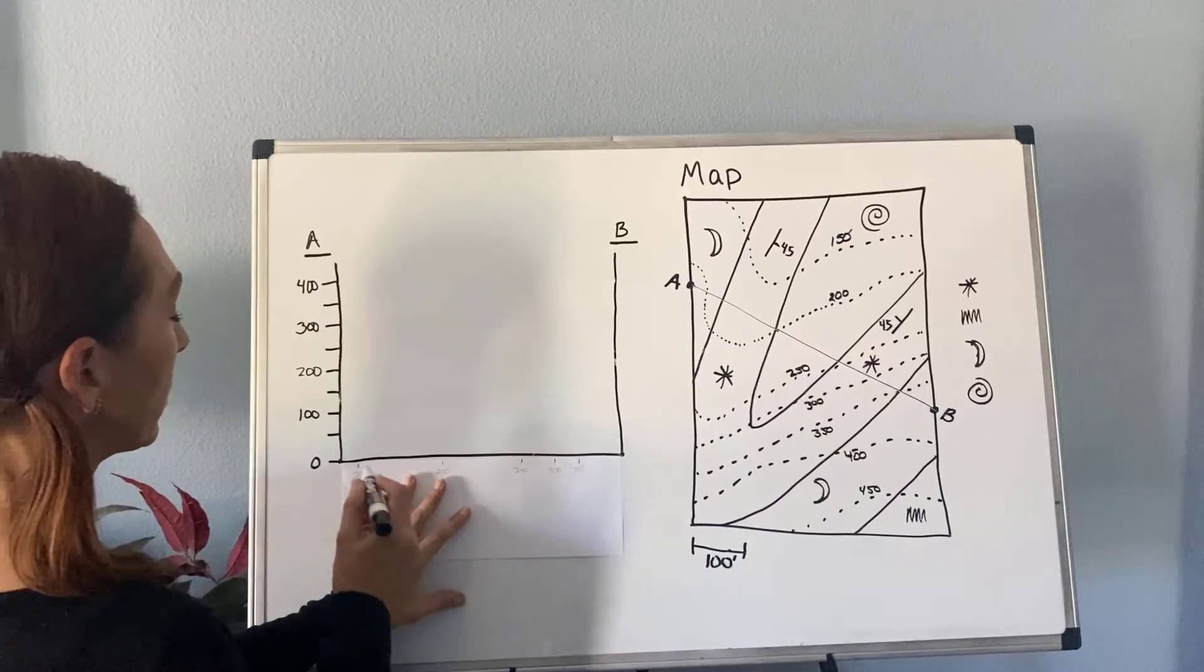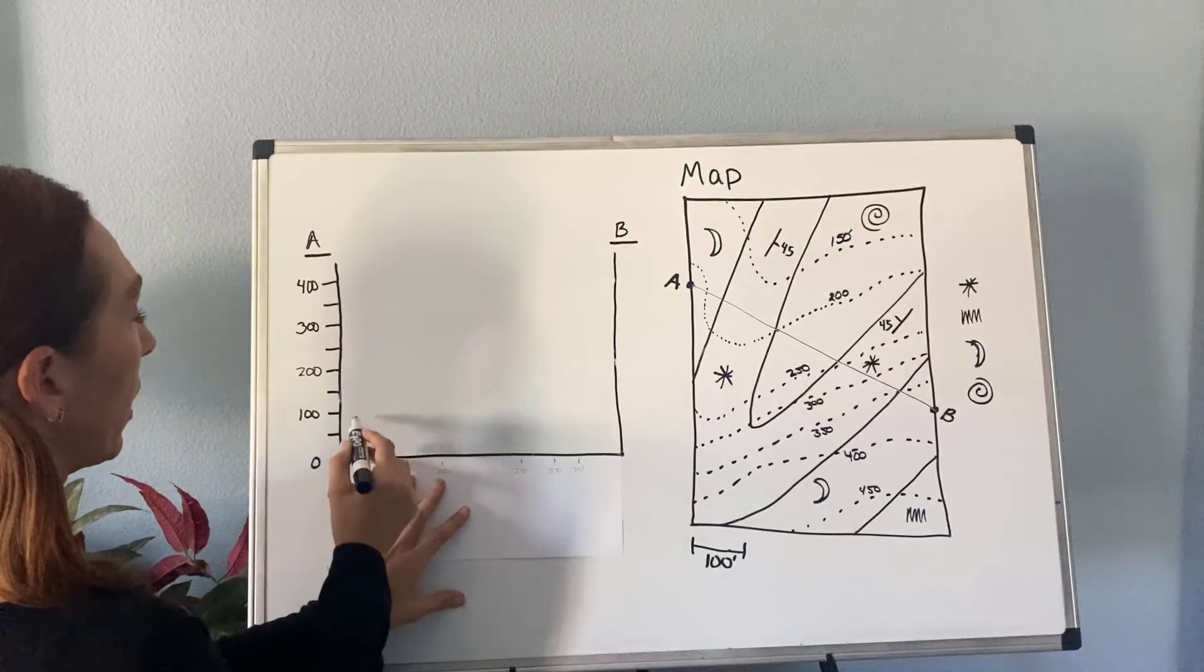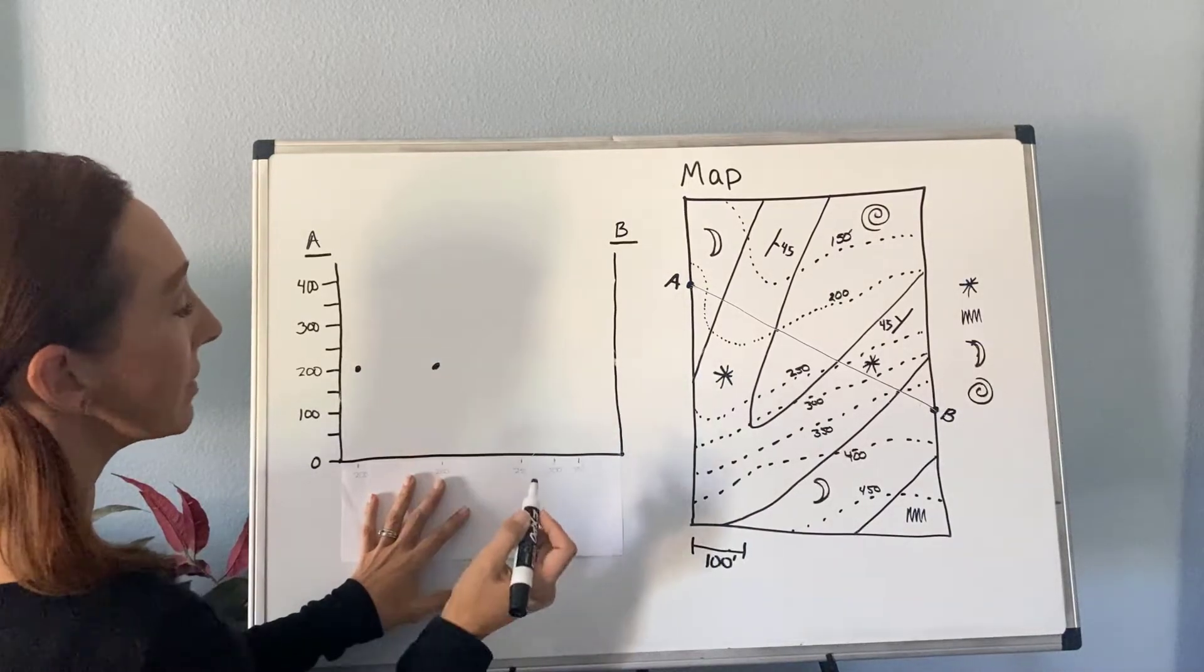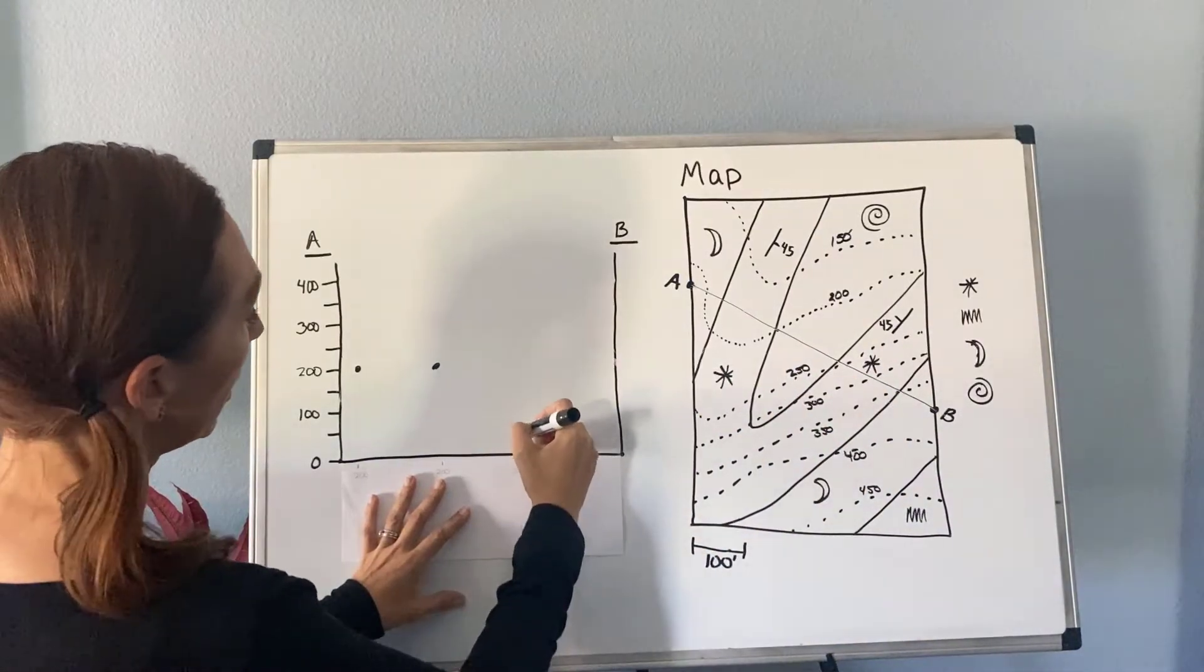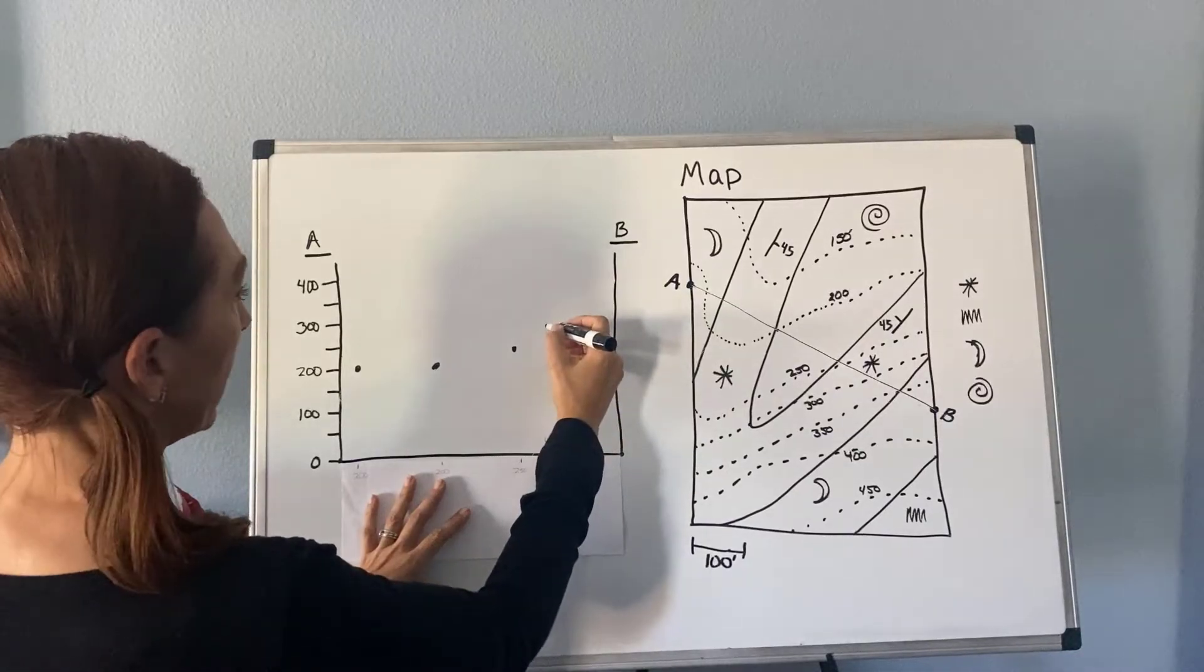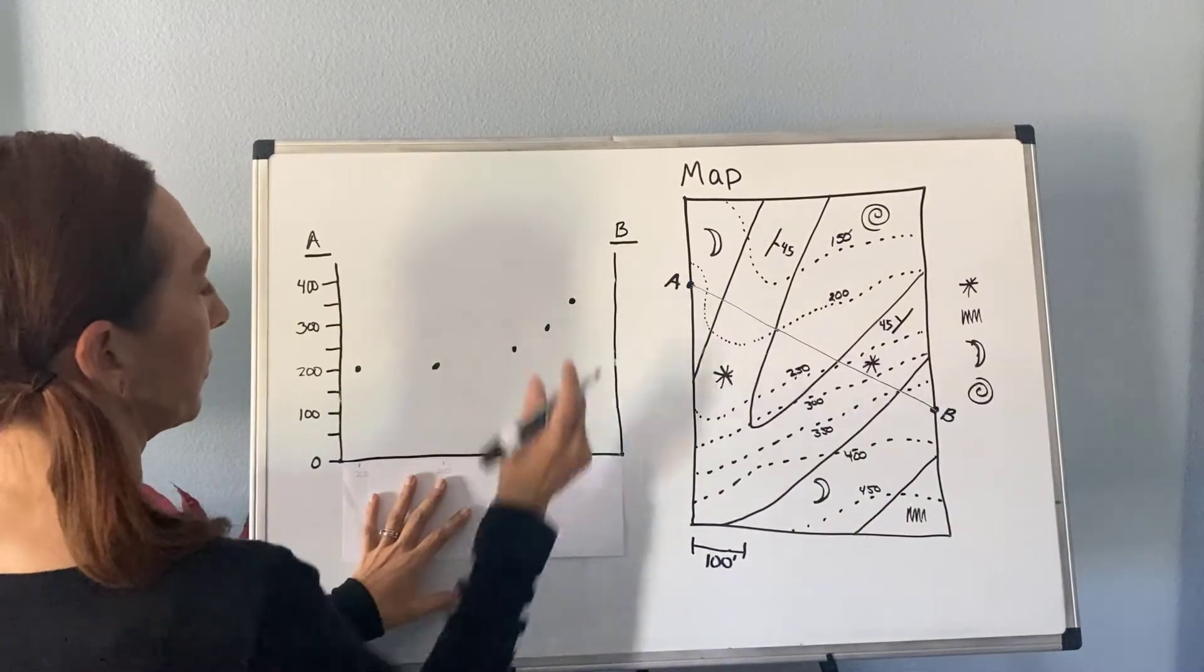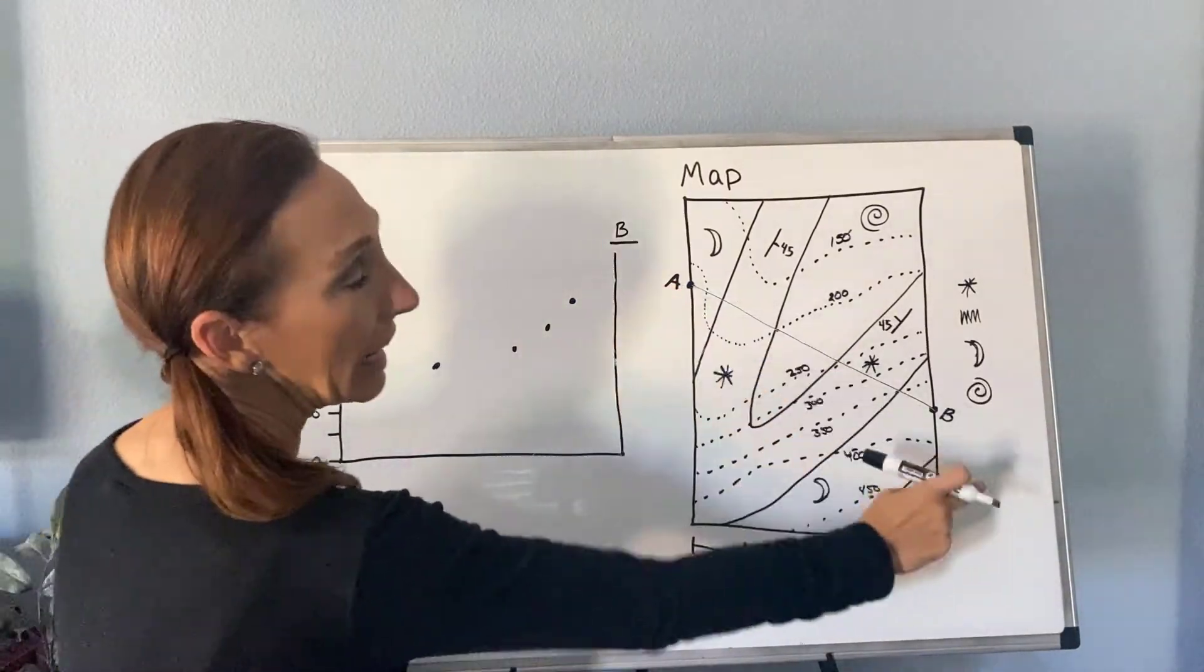So now I'm going to take my piece of paper and I'm going to put it across the bottom of my cross section and I'm going to say, okay, there's a 200 foot contour mark here. So I'm going to go up to 200 and make a dot and then same thing here, the 200. And this is the elevation, the topographic profile. So the shape of the land surface, I'm going to go above the 250, make a dot there, go above the 300, make sure it lines up with my 300 there and then 350, make sure it lines up with my 350 there. So these are the elevations as I traverse from A to B.